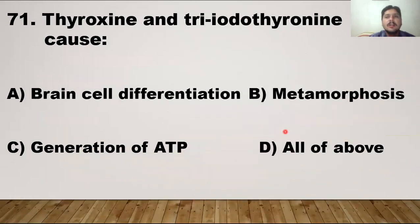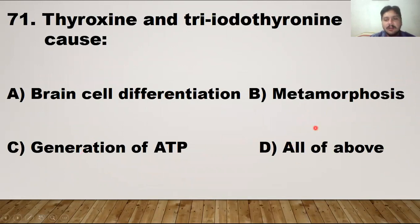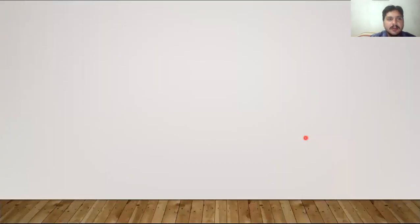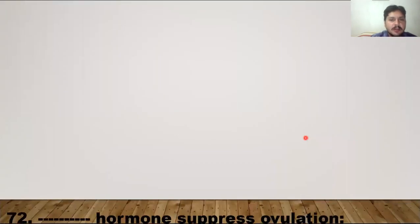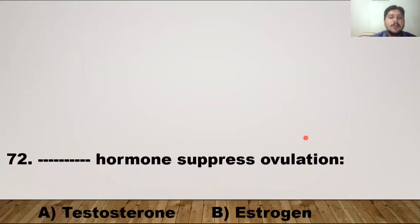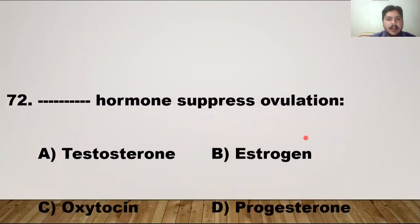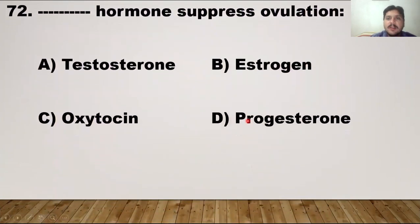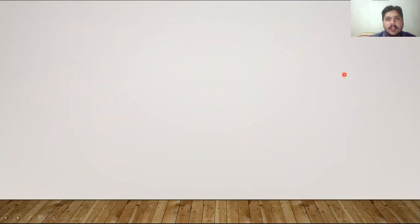Thyroxine and triiodothyronine cause brain cell differentiation, metamorphosis, generation of ATP, and all of the above — all these functions are performed by T3 and T4 hormones. MCQ number 72: progesterone is the hormone that suppresses ovulation.